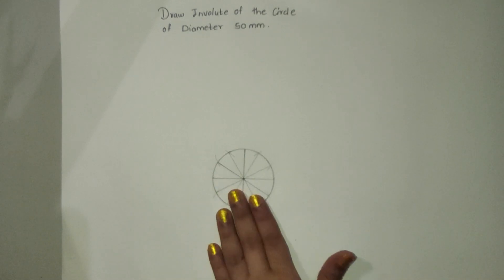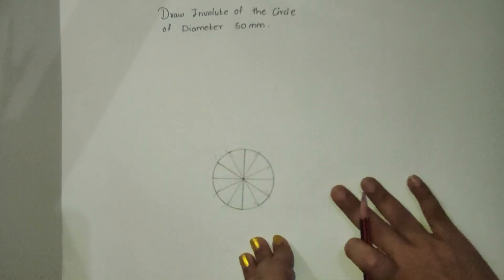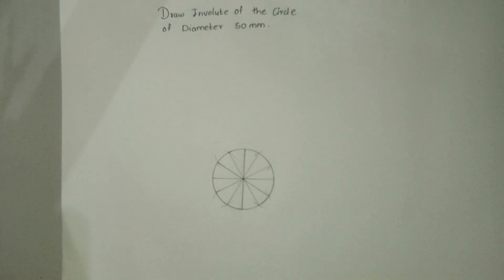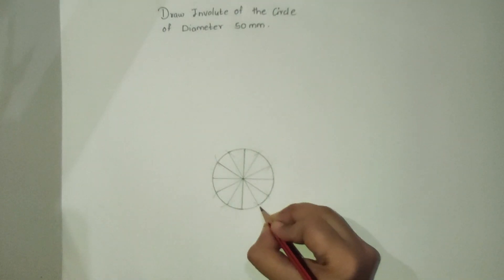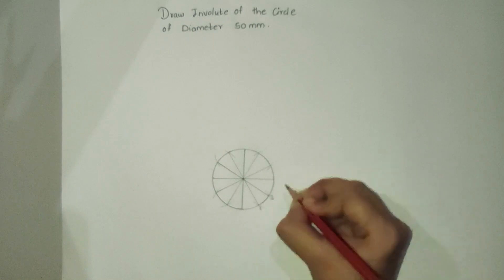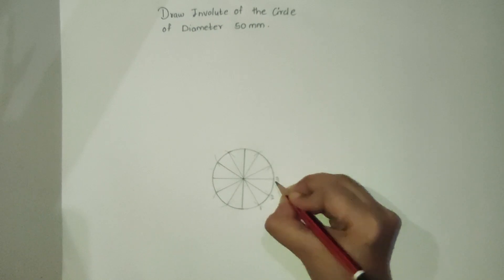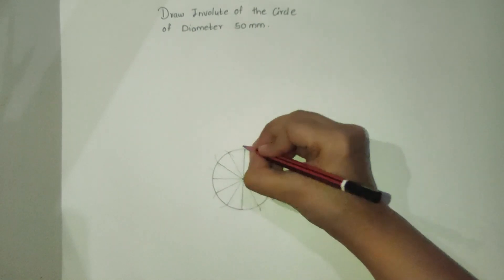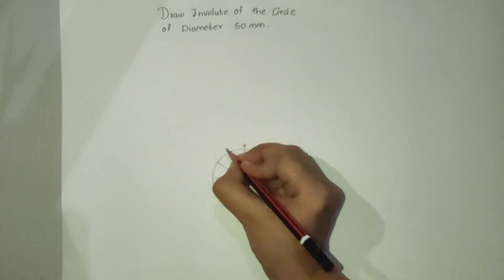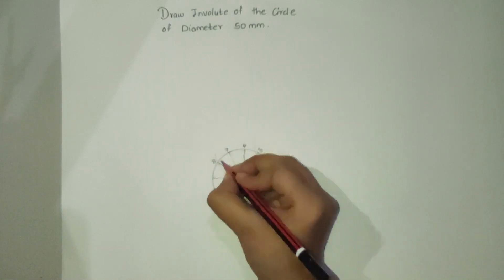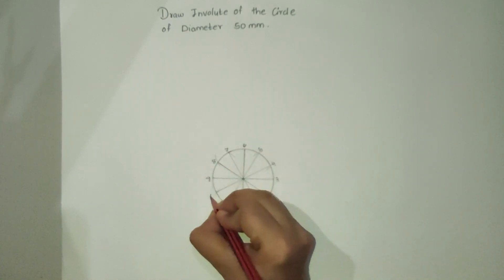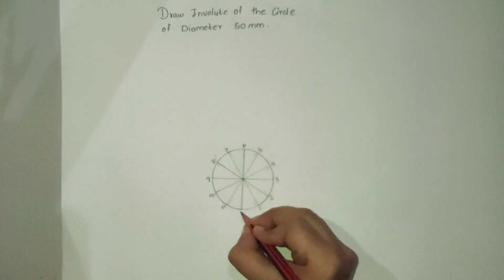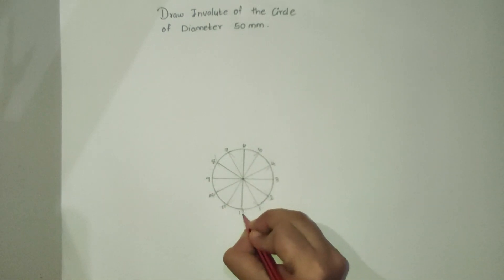The circle is now divided into 12 equal parts. Name the points obtained: 1, 2, 3, 4, 5, 6, 7, 8, 9, 10, 11, 12.